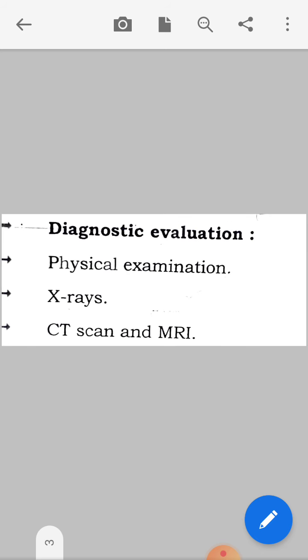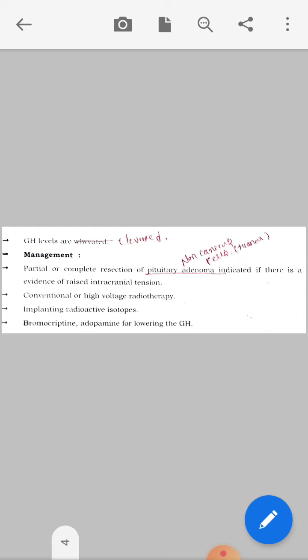Diagnostic evaluation: First of all, we will conduct the history. Then we should take the physical examination, particularly we have to see the head circumference, then chest circumference, and skin. Next is x-ray, then CT scan and MRI. And GH levels are elevated.